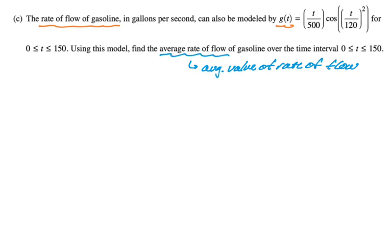So we're looking for average value, which is going to be integral divided by interval. So I'm going to write that down. It's the integral from 0 to 150 of G of T, DT, divided by 150 minus 0. The integral divided by the interval.